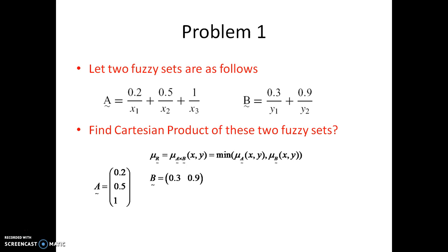Just like matrix multiplication, this is 3×1 and this is 1×2, so the 1s cancel and the result will be 3×2. So the Cartesian product should be a 3×2 matrix. Let us now find the minimum values.